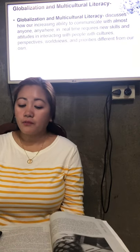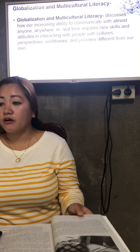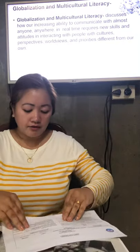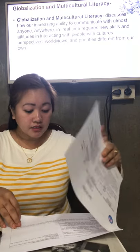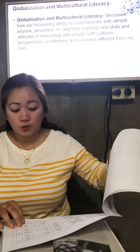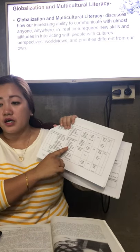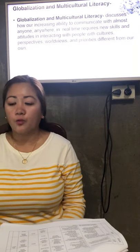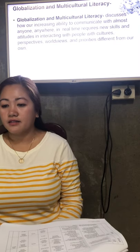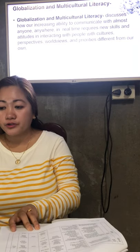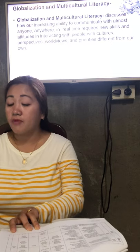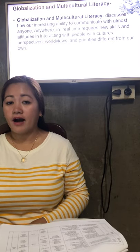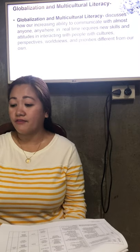This is an overview of what to expect for the whole course. Module 2 covers globalization and multicultural literacy — you can find that in the course syllabus. It discusses how our increasing ability to communicate with almost anyone, anywhere, in real time requires new skills and attitudes in interacting with people of different cultures, perspectives, world views, and priorities. We are not the only ones existing here — other nations have different cultures, so you have to be flexible.